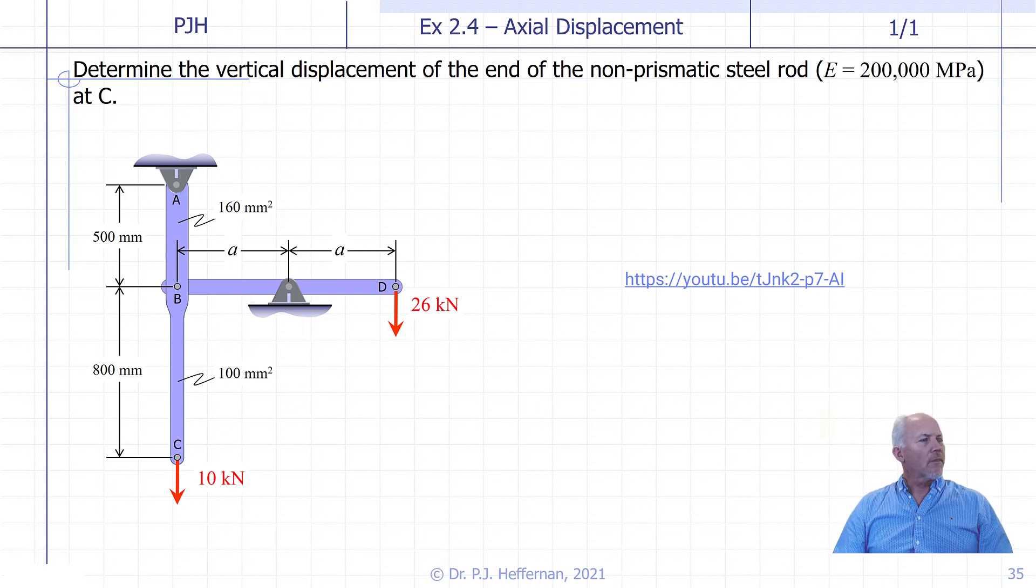Finally, as it pertains to displacements, we will look at this slightly more complicated structure and look for the axial displacements in the vertical bar ABC. Again, follow the link to see a solved solution to this problem.